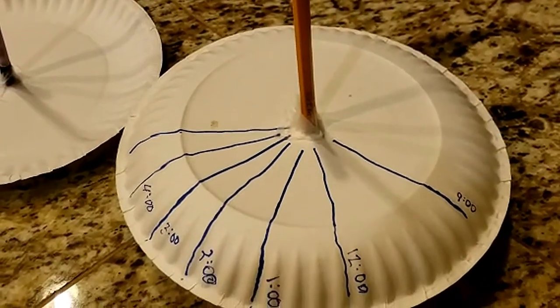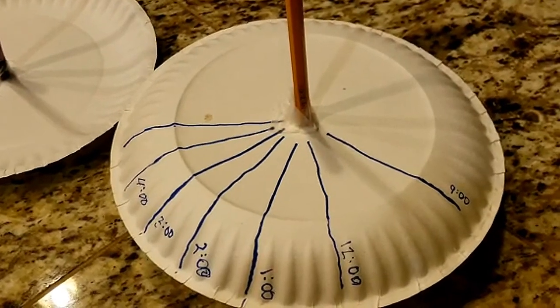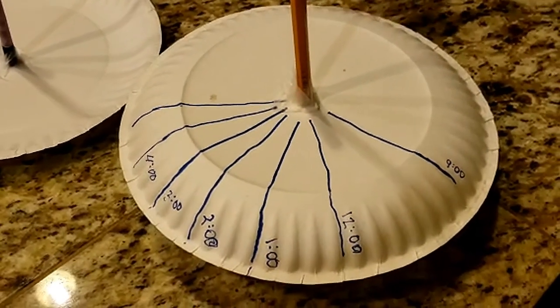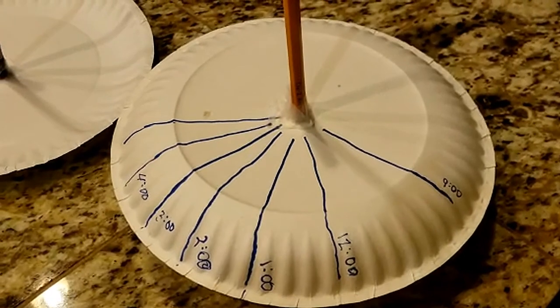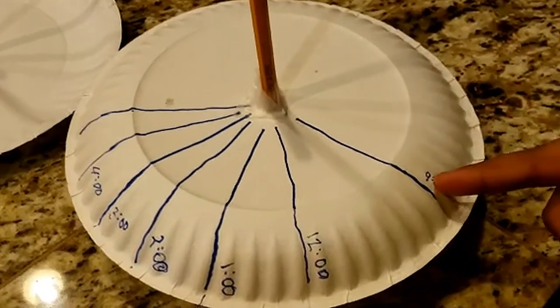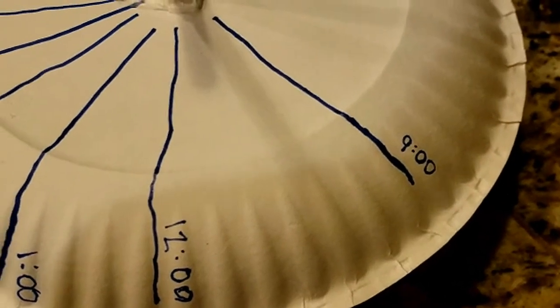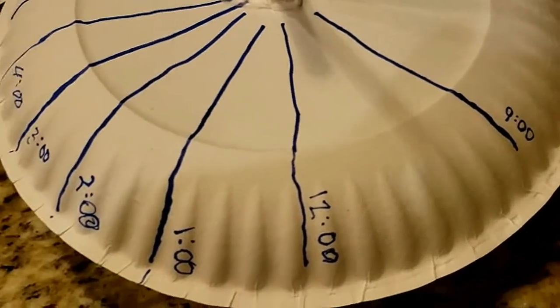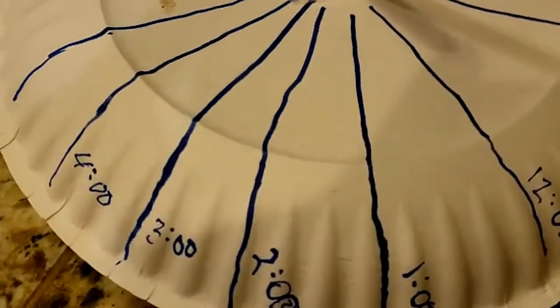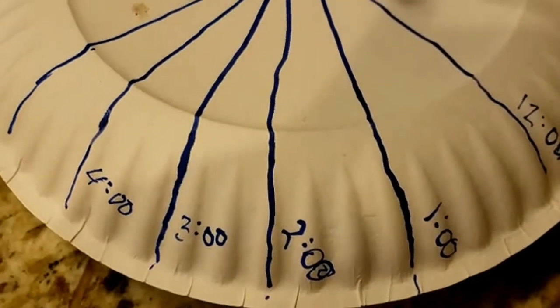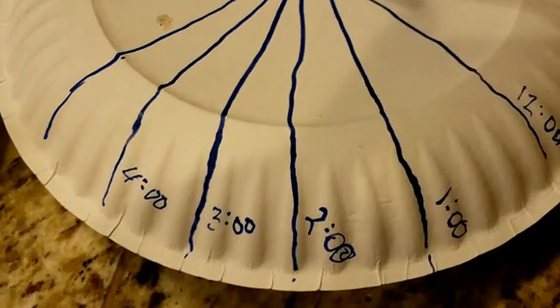Each hour on the clock, trace and label the pencil shadow like we did. This morning we started at nine o'clock. Try to get at least five shadows traced in a row. The more shadows you capture, the better your sundial will be.